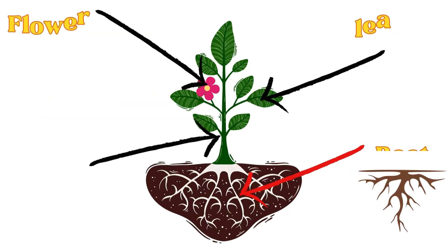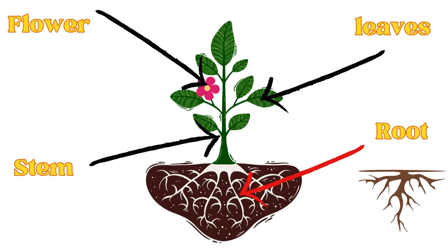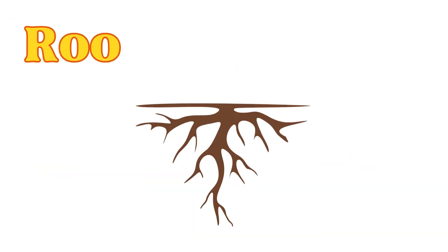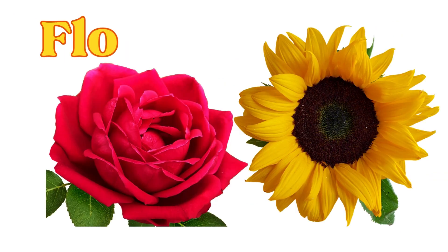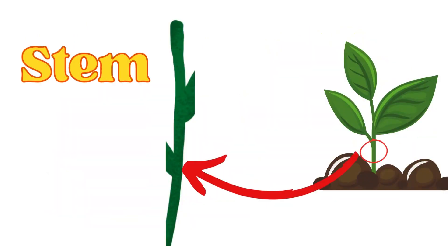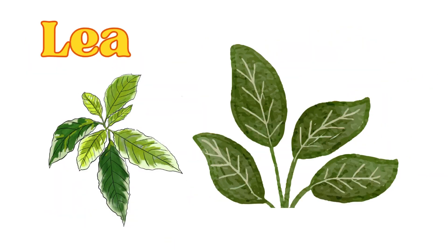Beautiful kids, let's revise the names of the parts of a plant with me. Root. Flowers. Stem. Leaves.